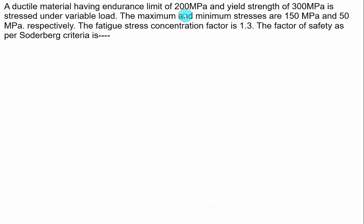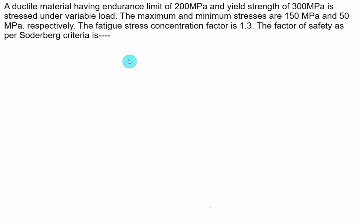A ductile material has an endurance limit of 200 MPa and yield strength of 300 MPa, subjected to variable load. The maximum and minimum stresses are 150 and 50 MPa respectively. From this we can calculate the mean value and the amplitude value. The fatigue stress concentration factor to be applied to amplitude stress is given as 1.3. Using the Soderberg criteria, we have to find the factor of safety.